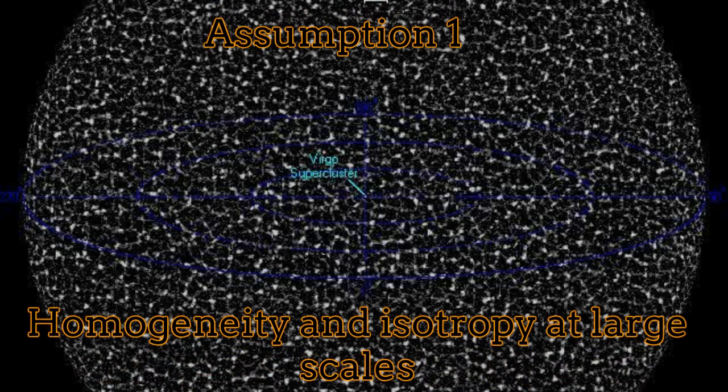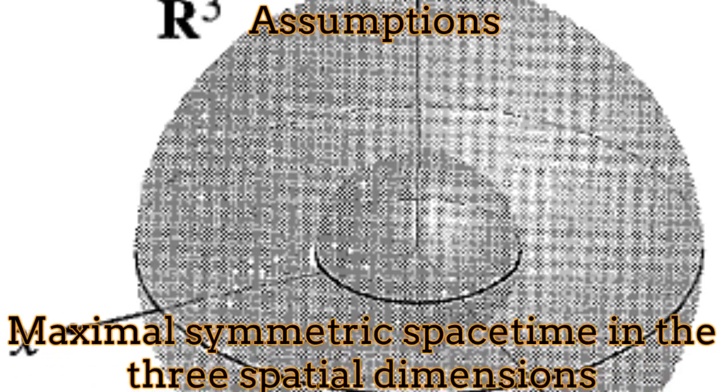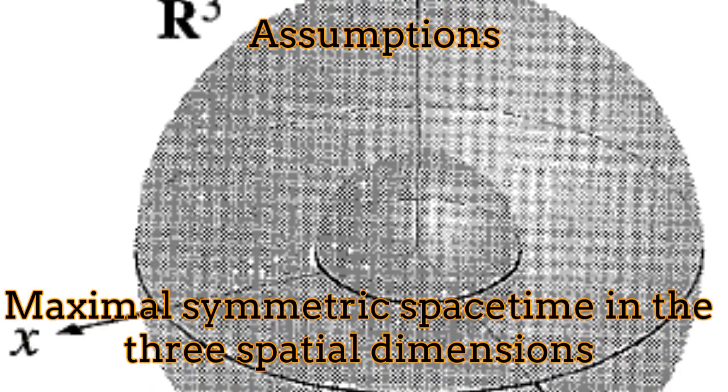There is a series of assumptions in order to develop cosmology inside the scenario of general relativity. The first assumption is the homogeneity and isotropy of the universe at large scales. Precisely because the space-time is homogeneous and isotropic at large scales, we can assume that the metric is maximally symmetric in the three spatial coordinates. However, the time coordinate still preserves a special status in this formalism.